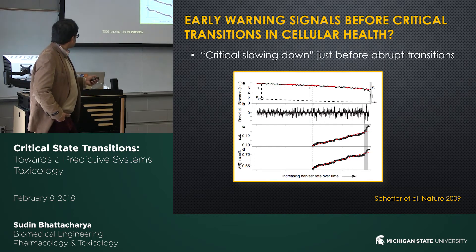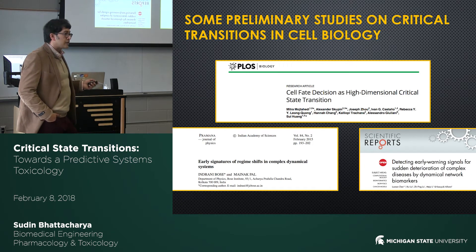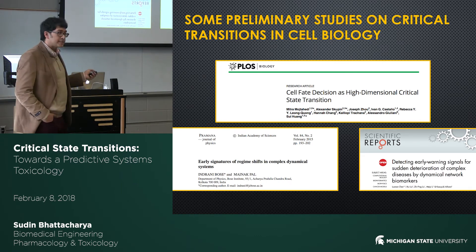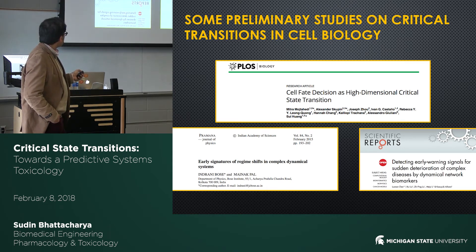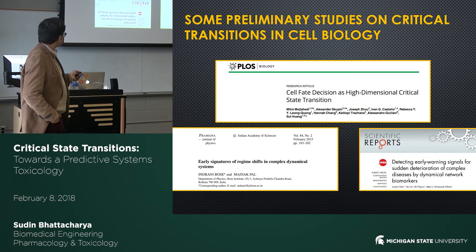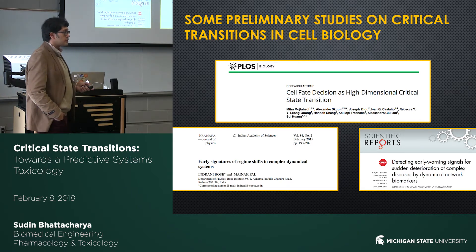Although the idea of critical state transitions is a few years old, in the cell biology field only in the last two or three years has a set of papers begun to come out applying these ideas. Sui Huang and co-workers applied this idea to a study of cell differentiation in the hematopoietic stem cell lineage. Other authors have applied it to trying to predict disease biomarkers. Still very much early days in applying this theory to cell biology.